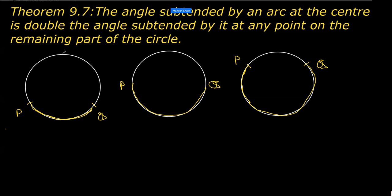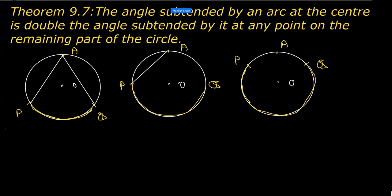After that, you should take a point on the alternate segment — that means in case of a minor arc, it is the major segment, and in case of a major arc, it is the minor segment. We then take the center as O in each case, and we need to join this point P with A and P with Q, so as to subtend an angle.